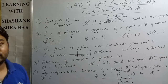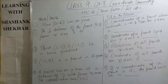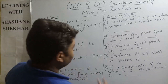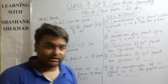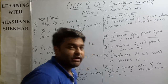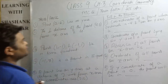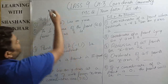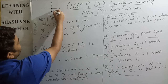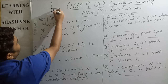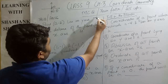Now moving to the True/False questions. Question one: point (0, -2) lies on the y-axis — true or false? We can plot this point: x is 0 and y is minus 2. Since x is 0, the point lies on the negative y-axis. So the statement is True.